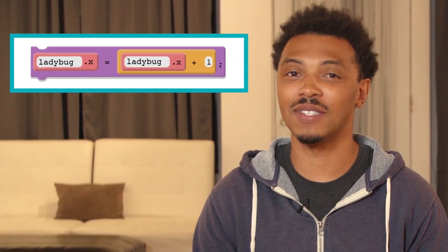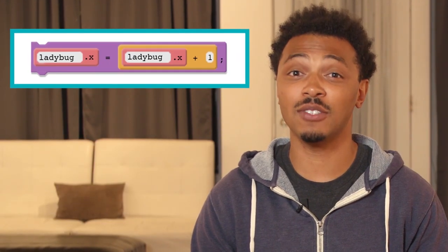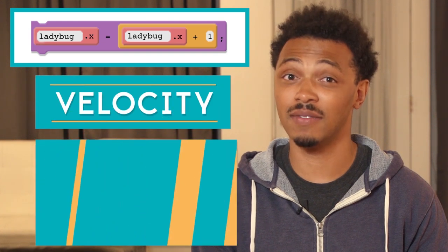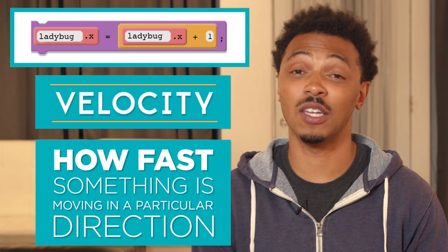Here's an example we've seen before. Using the counter pattern with the sprites X property we can control the sprites velocity, how fast it's moving in a particular direction.